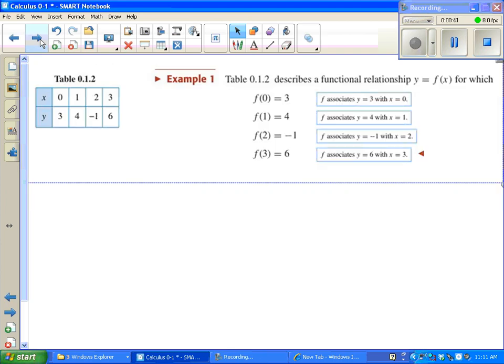We've got an example of a table that describes a function. A function takes any input and maps it directly to an output. Every input can only have one output. We've got some notation here too, like f(0) equals 3. That means when x equals 0, y equals 3. f(1) equals 4 means when x equals 1, y equals 4. This is notation you should be totally familiar with.